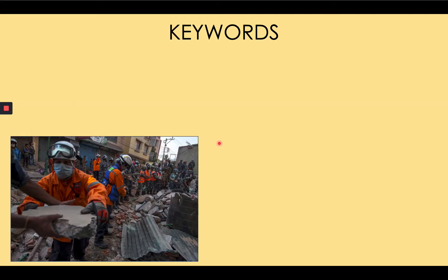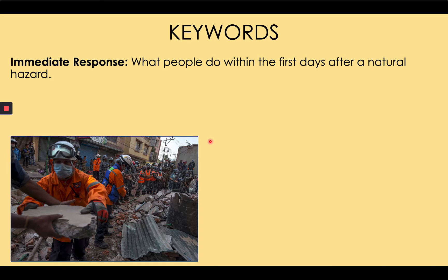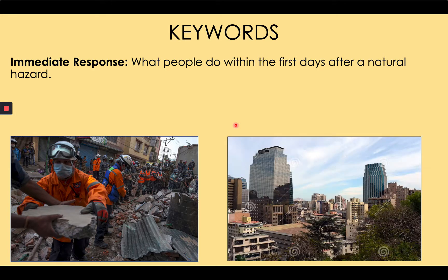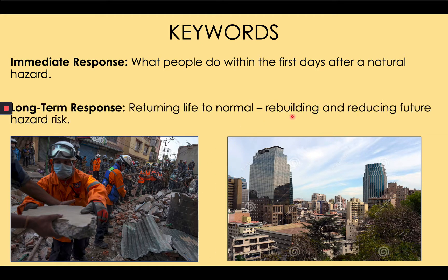Two key words today. There is one kind of response that happens immediately after an earthquake, and the main purpose of this kind of response is to save lives. It's called an immediate response — for example, searching and rescuing people trapped under rubble. The other kind of response is about preventing future earthquakes from causing similar damage. It usually means building stronger buildings. That's a long-term response.